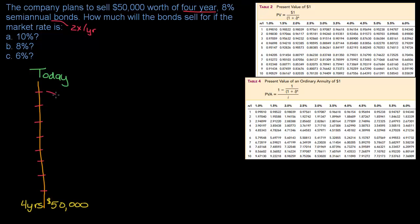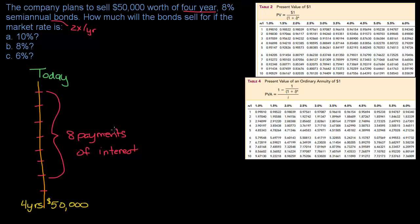Eight payments of interest at 8%. It might be helpful at this point to actually calculate the interest. Do you remember the formula for interest? Most students remember it as I equals PRT — Principal times Rate times Time. The principal is the outstanding balance on the loan, so that's $50,000.